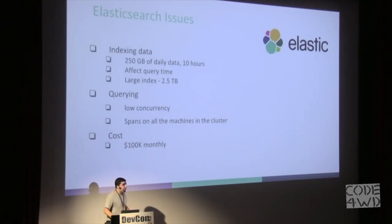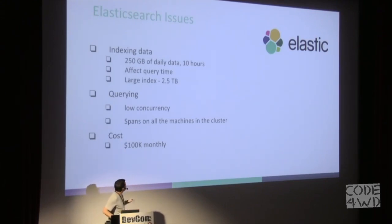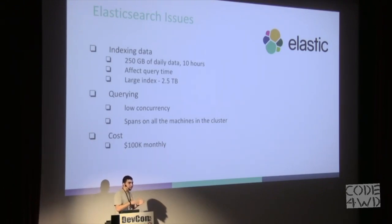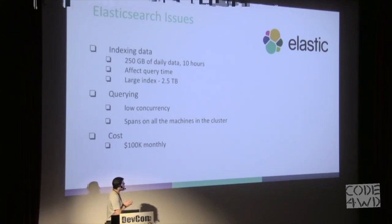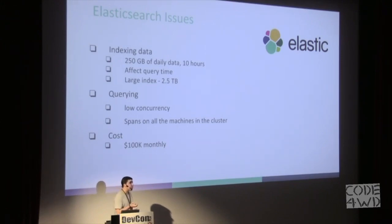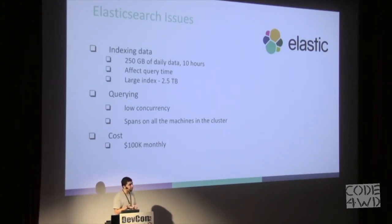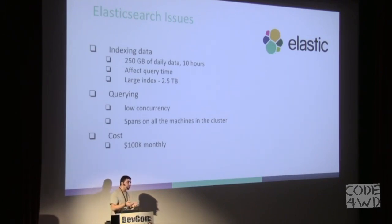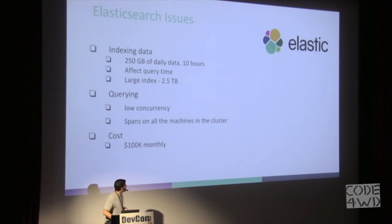However, as time passed and our data grew, we faced many challenges with Elasticsearch. The first issue was with indexing data — partly because of the way we designed our documents. Indexing only 250 gigabytes of data took us 10 hours, and during those 10 hours the cluster became very unresponsive, meaning we could execute only a very small number of concurrent queries and the average query response time was anywhere from 6 to 10 seconds — too lengthy for us.